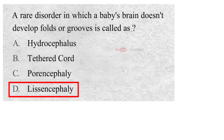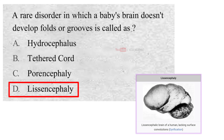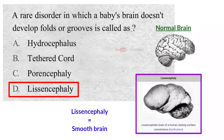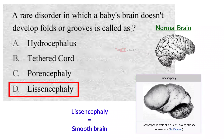D. Lissencephaly. Lissencephaly, which literally means smooth brain, is a rare gene-linked brain malformation. It is characterized by the absence of normal convolutions in the cerebral cortex and an abnormally small head.